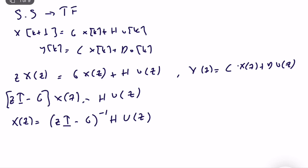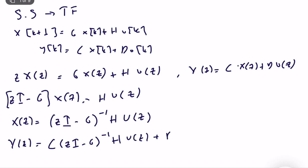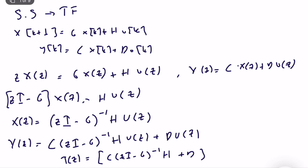But what we want is Y(z). So Y(z) = C·(zI - G)⁻¹·H·U(z) + D·U(z), and the transfer function T(z) — from input to output — is T(z) = C·(zI - G)⁻¹·H + D. This is the transfer function for a given state-space representation.